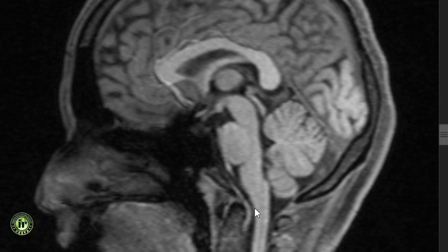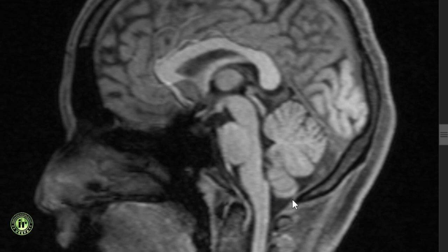The subarachnoid cisterns are situated at the base of the brain and around the brainstem, free edge of the tentorium and major arteries, and communicate freely with each other. The cisterna magna lies between the medulla and the posterior inferior surface of the cerebellum. It receives CSF from the fourth ventricle via the foramina of Magendie and Luschka and is continuous below with the spinal subarachnoid space. It contains the vertebral and posterior inferior cerebellar arteries and the 9th, 10th and 11th cranial nerves. When the cistern is very large, it is called the mega cisterna magna.